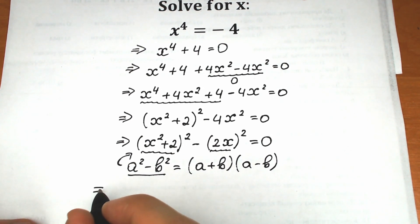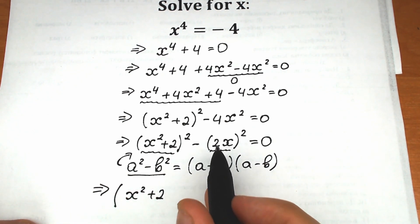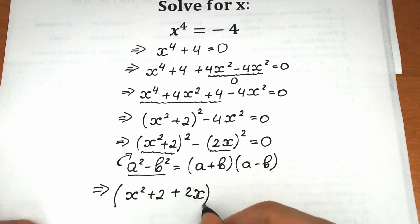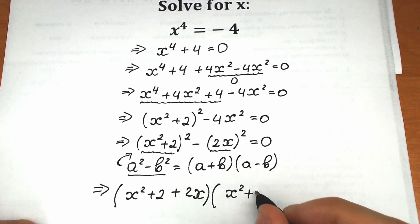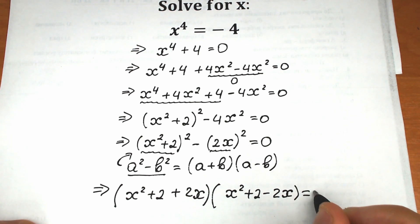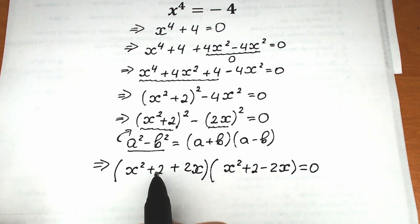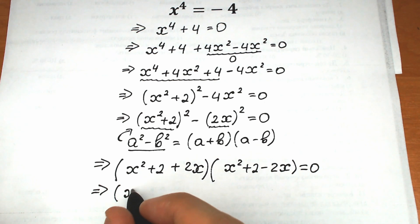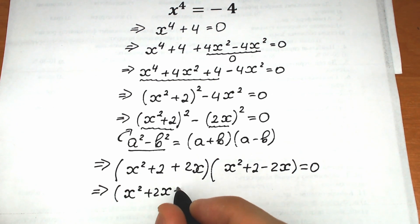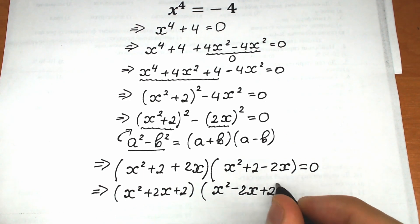So we have two parentheses. The first: (x squared plus 2 plus 2x), and the second: (x squared plus 2 minus 2x). Rearranging the order for clarity, the first parenthesis is (x squared plus 2x plus 2) and the second is (x squared minus 2x plus 2), equal to zero.